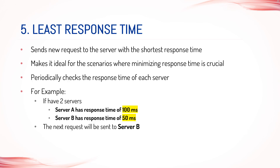5. Least Response Time. The Least Response Time algorithm sends new requests to the server with the shortest response time. The algorithm periodically checks the response time of each server and sends new requests to the server with the shortest response time. For example, if server A has a response time of 100 ms and server B has a response time of 50 ms, then the next request will be sent to server B.